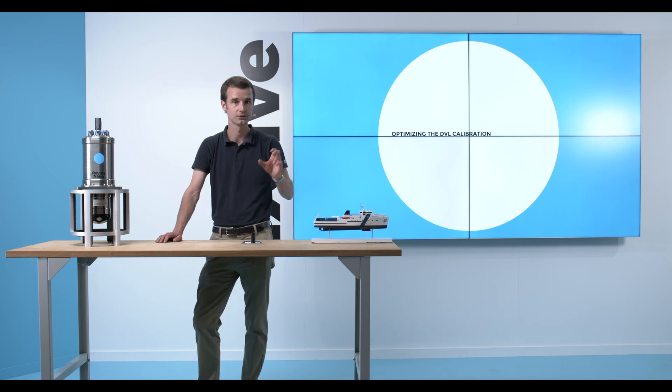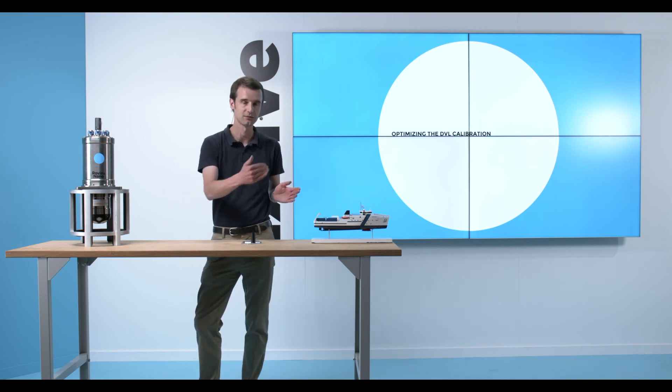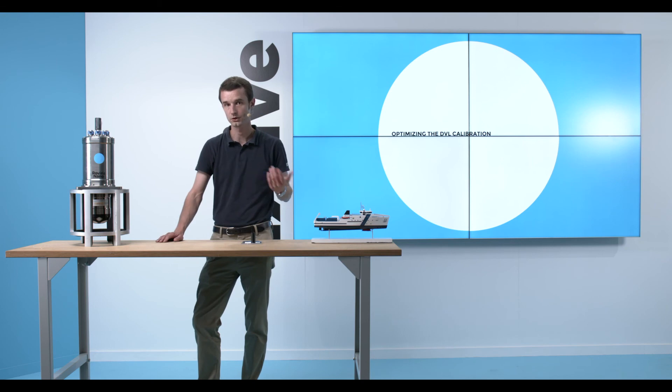Nothing prevents you to continue your calibration line a little bit further like again a few hundred meters to narrow even better the estimates of the heading misalignment and the scale factor misalignment. The more you go, the better accurate it will be